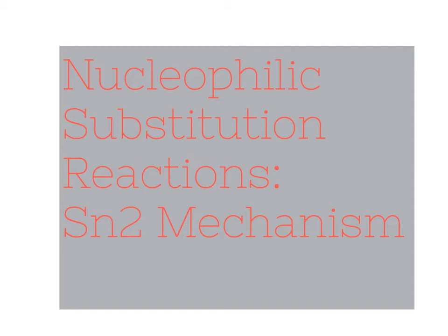In the next unit, we will look at a separate mechanism referred to as the SN1 mechanism. These two mechanisms — SN1 and SN2 — are the two ways that we will carry out nucleophilic substitution reactions. We look at them from the perspective of what's going on in order to make and break the bonds required to go from the starting material to the product. We're going to walk through and understand that process by taking a look at this SN2 reaction mechanism for nucleophilic substitution.